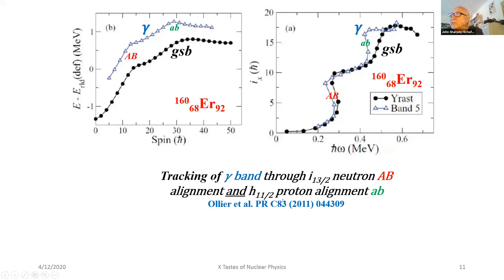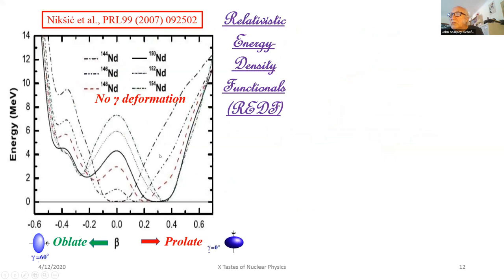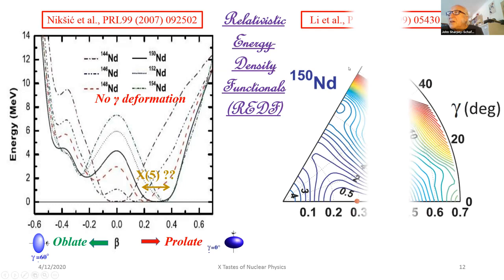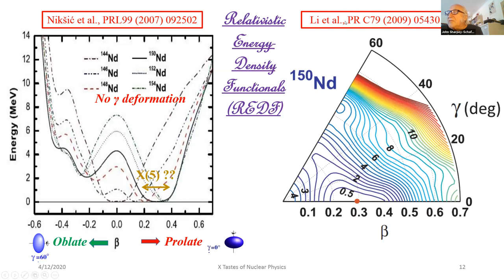The need for the gamma band is nicely illustrated by calculations by Nisic, Pito, Ring and colleagues in a Physics Reviews Letter, using very sophisticated relativistic energy density functionals. They found two minima — one oblate and one prolate — and said the surface was rather flat, perhaps an example of X5 symmetry. But when Ziping Li was hired from Chongqing, China, he calculated the energy surfaces including the gamma degree of freedom and found those two minima are actually connected in the gamma plane — only one real minimum. The message is: you cannot ignore the gamma degree of freedom.